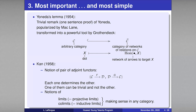The Yoneda remark says that in any category, when you consider an object, you can associate to it the full network of relations to that object. If you know the full network of relations, then you know the object you are talking about. The proof of this fact requires only one sentence — it is extremely elementary.